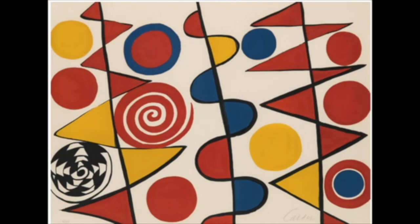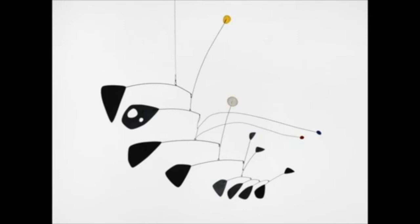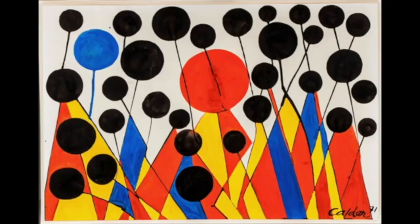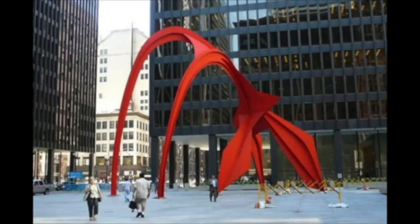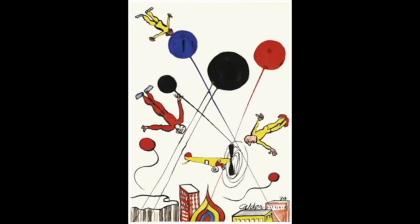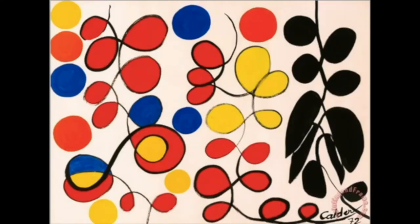Sometimes his lines are thin, and sometimes his lines are thick. Sometimes they are straight, and sometimes they are curved. We can always see this use of line, shape, and color. Have you noticed that a lot of his work uses black and white and the primary colors? Red, yellow, and blue?